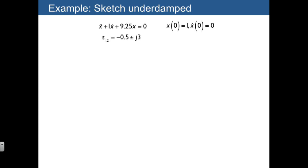The first thing that we identify is that if we're interested in the exponential envelope, we already know that we have a time constant of 2 from the real part of the root.